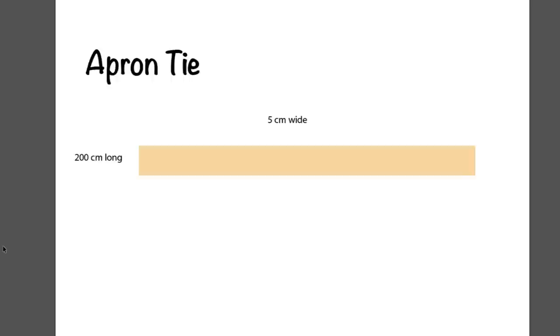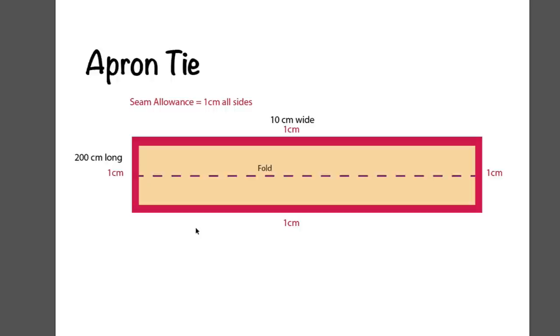Now we're going to work on the apron tie. I've determined that mine needs to be 200 cm long, and I think 5 cm wide is a really nice width for a waist tie on an apron. Rather than using two pieces of fabric and sewing them together like we are in the apron body, for the tie it's a lot easier to go ahead and just make it a little bit wider and fold it in half. We have a fold line now that goes down the center, and instead of 5 cm wide, now we're 10 cm wide.